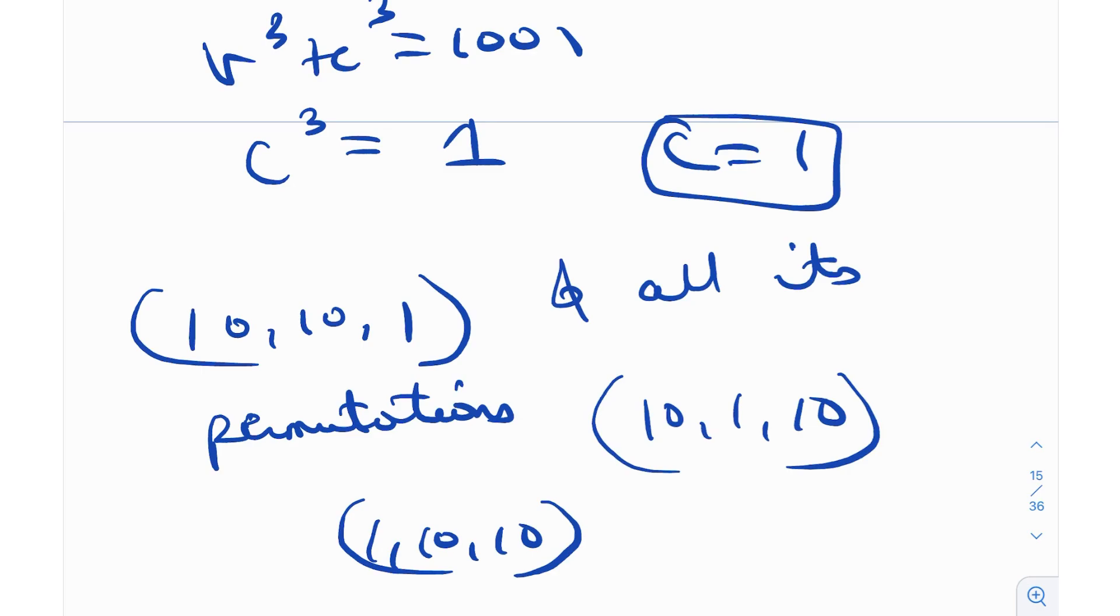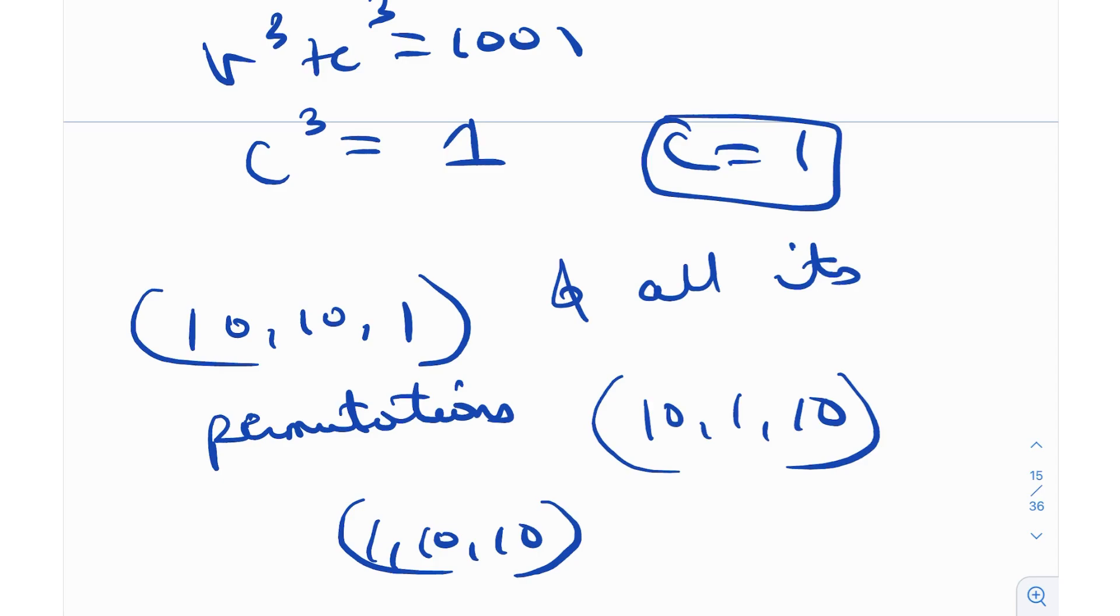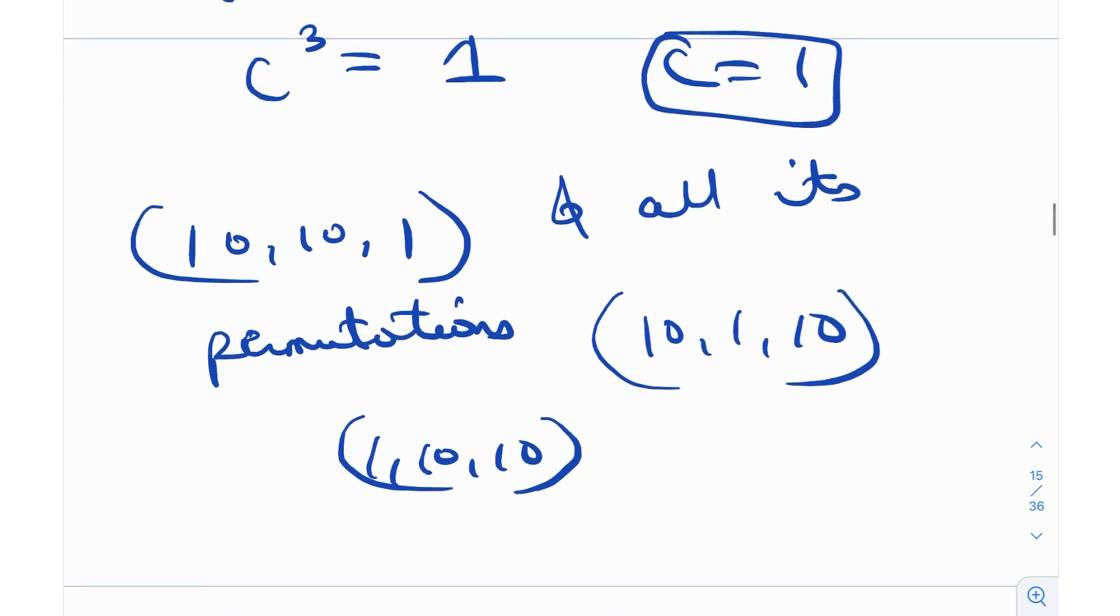So I hope you enjoyed that. It was one of the most classic number theory problems out there. This is something that you should keep in mind, especially the fact that whenever you have cubes, mod 9 is a very good idea. You can use some other, reduce some other mod n as well, but mod 9 is generally, as a rule of thumb, it's good to go. Hope you learned something from that.